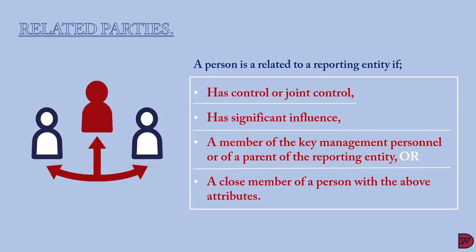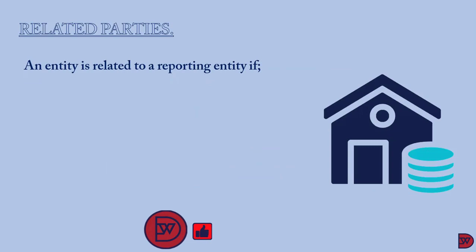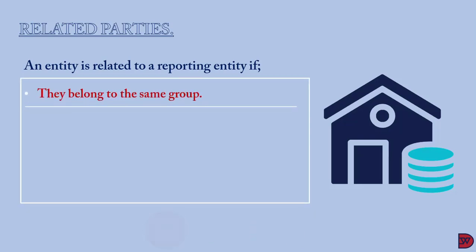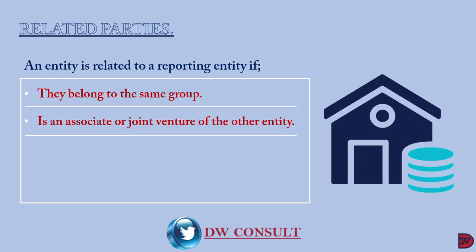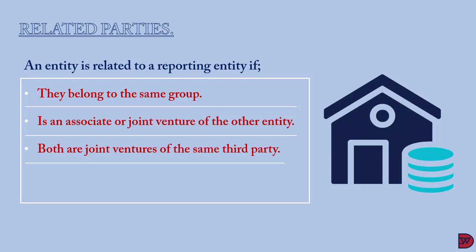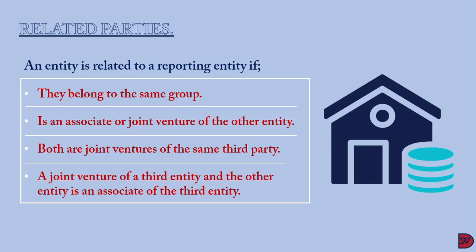An entity can also be a related party to another entity if the following conditions apply: first, if the entity and the reporting entity are members of the same group — meaning one is a parent and the other a subsidiary, or vice versa, or both are subsidiaries of a common parent; second, if the entity is an associate or a joint venture of the other entity; third, if both entities are joint ventures of the same third party. This means there could be three joint ventures in an arrangement where two of them are related.